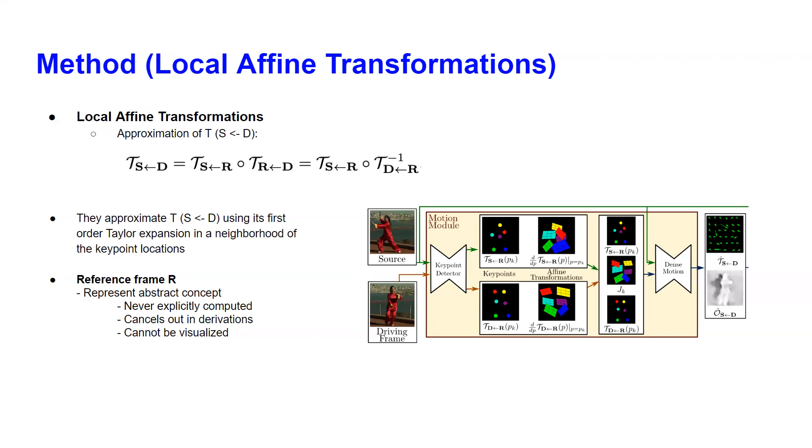They use an abstract image frame from the driving video and use that frame to first estimate the key point changes in the driving frame and then use that information to map it to the source frame. The technique here is that the reference frame is just an abstract concept and it never explicitly computed and cancels out in their derivations and we cannot actually visualize it.